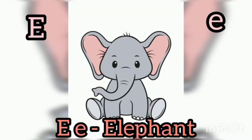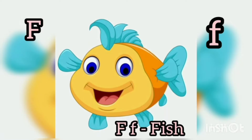E for Elephant, Elephant means tope. F for Fish, Fish means tope.